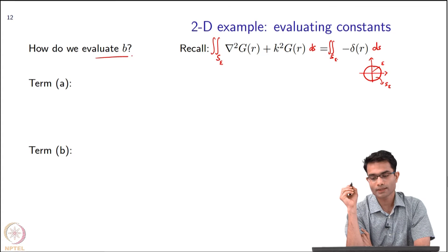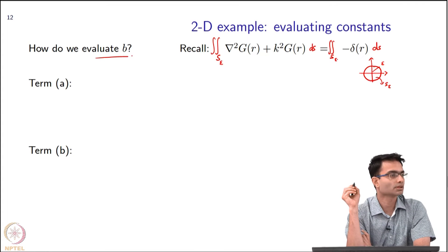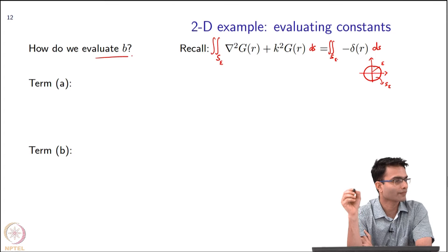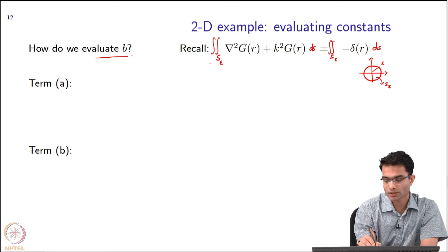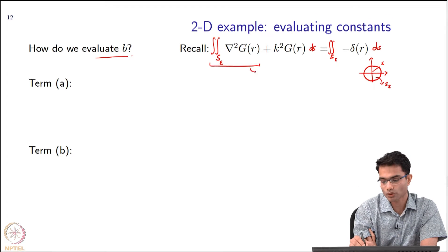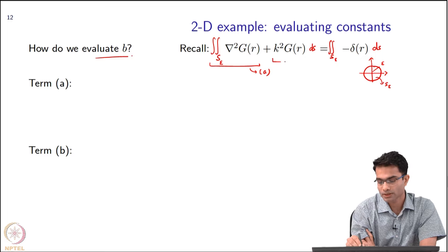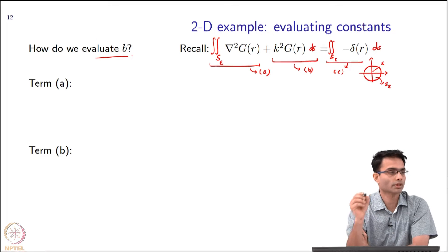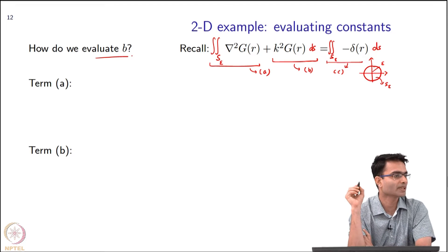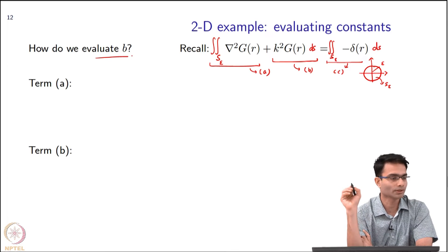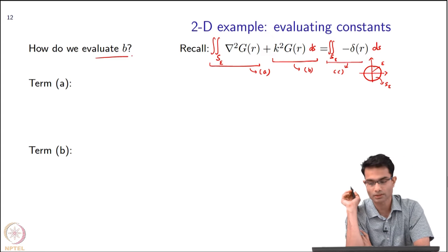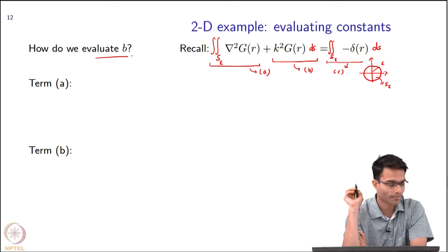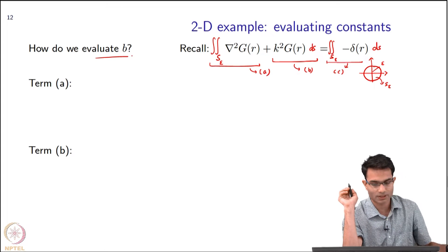Evaluating these integrals requires some care. The first term I am going to call term A, the second term I am going to call term B, and the third term I am going to call term C. We will individually go over A, B, and C and do a budgeting to get the constant — that is the approach we are going to take.